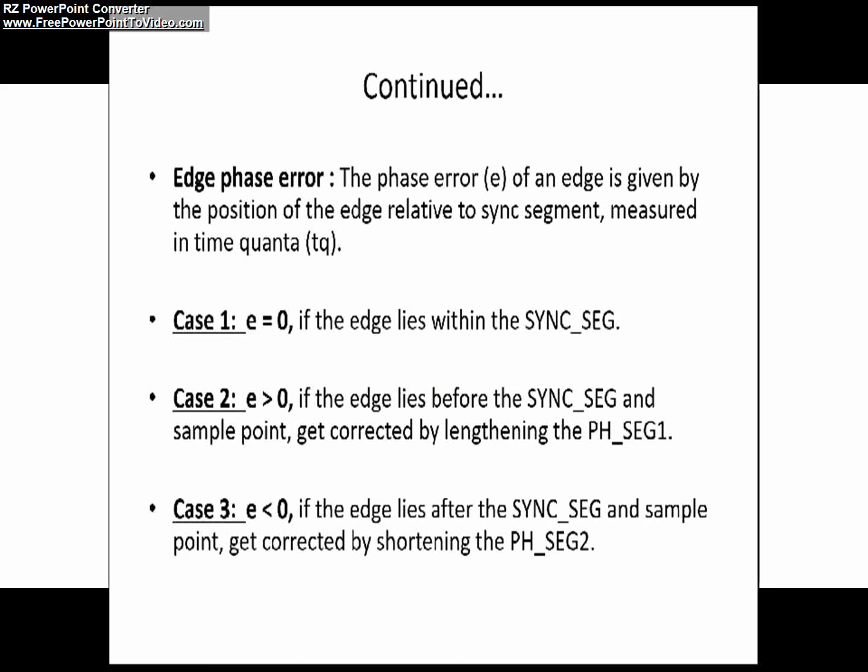The phase error of an edge is given by the position of the edge relative to the sync segment, measured in time quanta. As you can see in this slide, I have already explained how the edge phase error occurs in a CAN network.